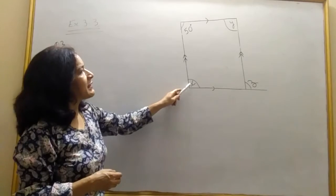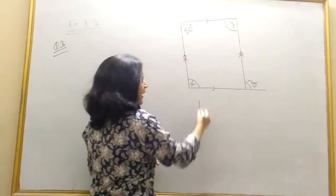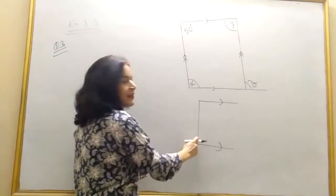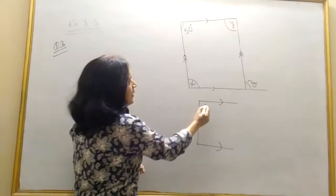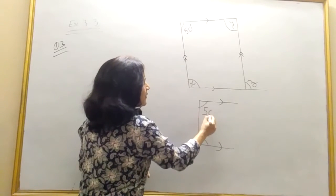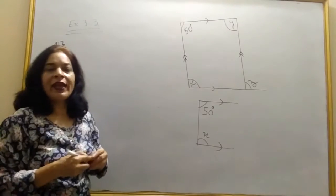We can find x using co-interior angle like this. If this line is parallel to this line, I will consider this transversal. So these are co-interior angle. It is 50 degrees and this one is x.